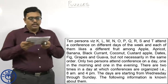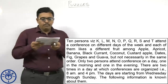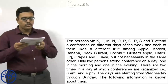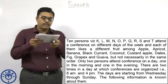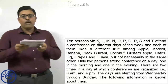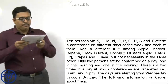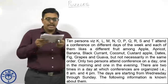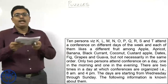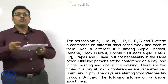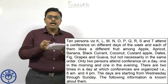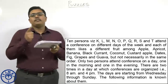Ten persons, namely K, L, M, N, O, P, Q, R, S, and T, attend a conference on different days of the week and each of them likes a different fruit among apple, apricot, banana, blackcurrant, coconut, custard apple, dates, fig, grapes, and guava. So there are 10 people who attend a conference on different days of the week and they like 10 fruits.